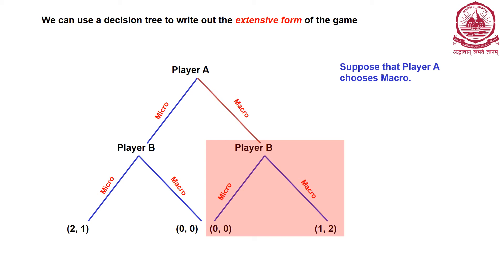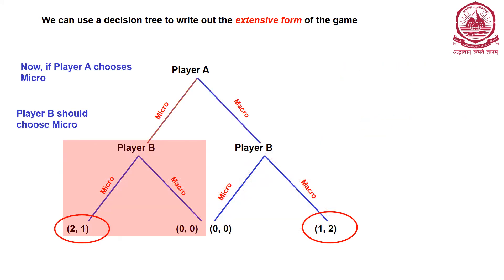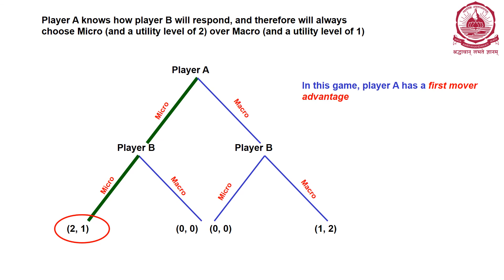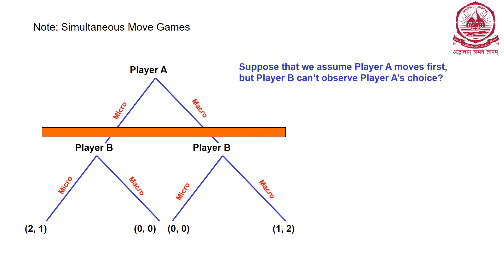If instead the game is simultaneous and player B does not know player A's choice, we connect player B's decision nodes with a line representing the information set. In that case we are back to mixed strategy equilibrium, and we apply the principles learned earlier to calculate a mixed strategy and find the answer.